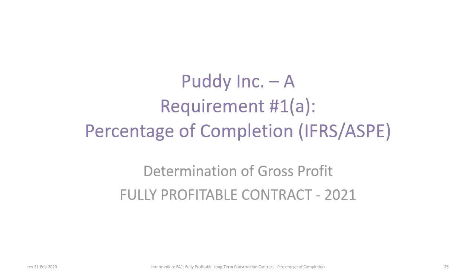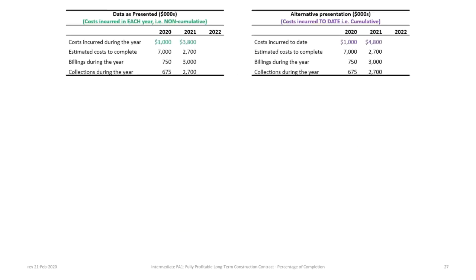We now progress to year 2021. In 2021, costs incurred during the year are $3.8 million. Management estimates cost to complete at $2.7 million. Billings were $3 million and collections were $2.7 million. Under the cumulative presentation, this is where things change — the first year remains the same, but in year two we show $4.8 million, which is $1 million plus $3.8 million.